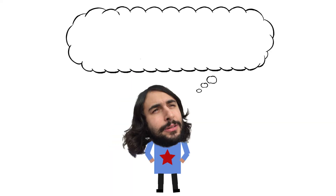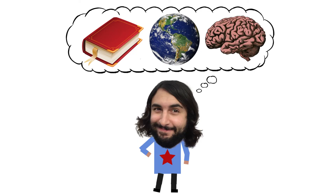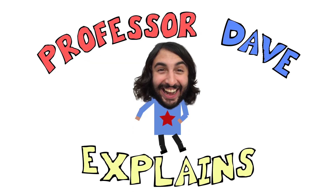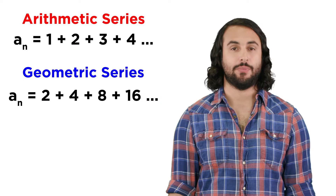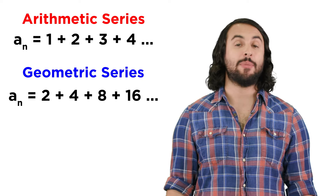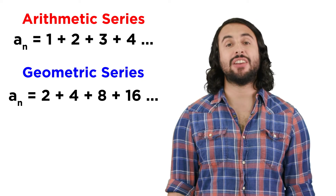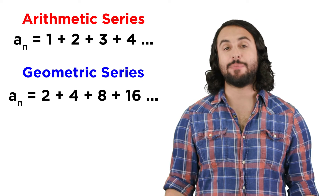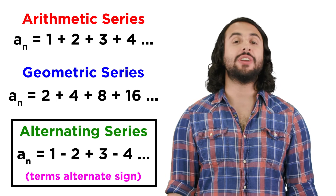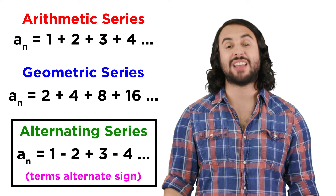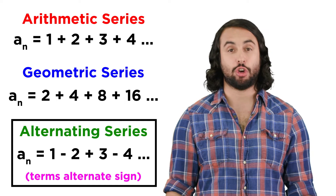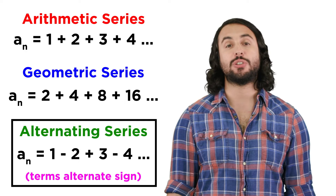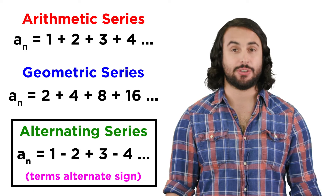It's Professor Dave, let's look at alternating series. We've examined arithmetic sequences and geometric series, so let's look at another type of series now. An alternating series is one in which the signs of the terms in the series alternate between positive and negative values.